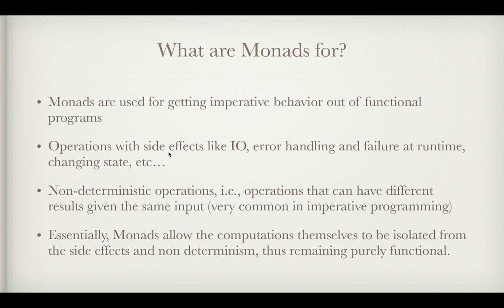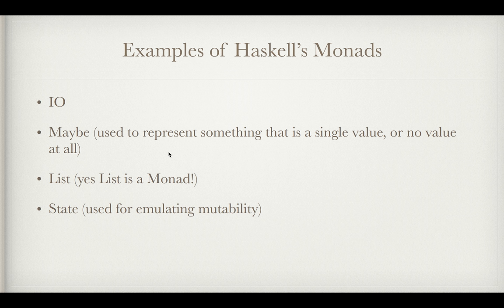So monads are used for getting imperative behavior out of your functional programs. Operations with side effects like IO, failure at runtime, changing the state of objects, non-deterministic operations. You can imagine that a change in global state might change the behavior of your functions given the same input. So f of 3 might yield 5 and then another time might yield 7 depending on if f uses some global state that could be changing. So monads allow you to isolate the computations themselves from these side effects and this non-deterministic behavior thus the computations will still remain purely functional.